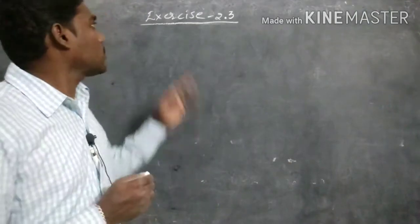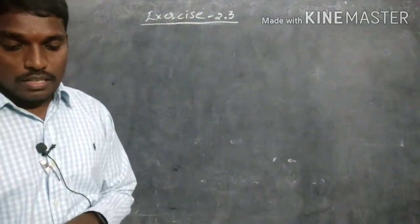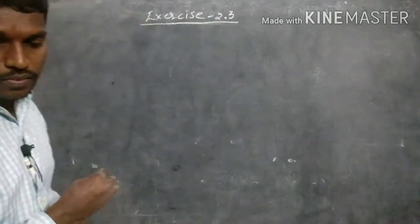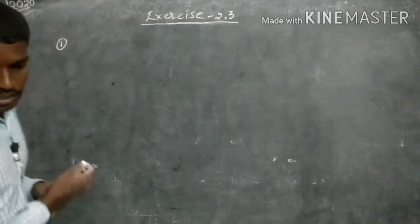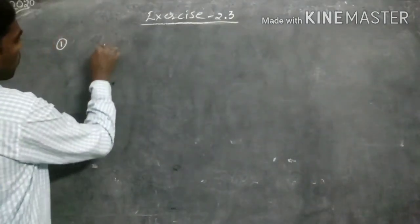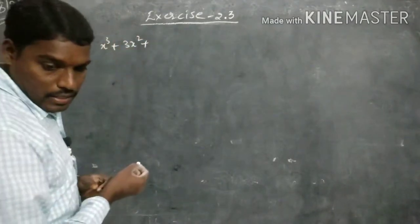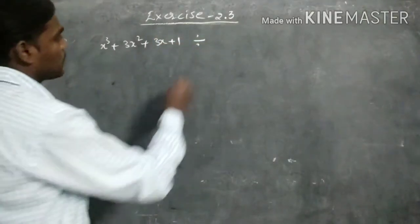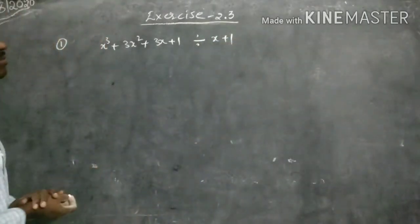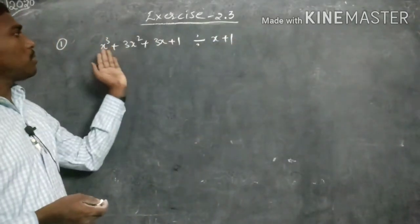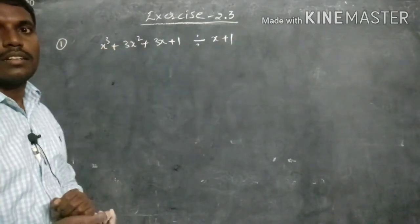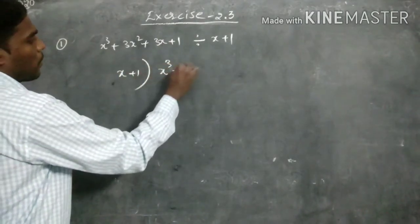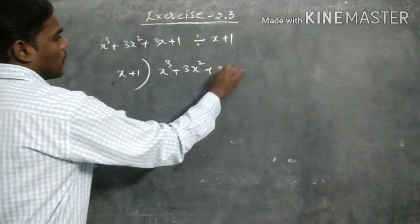In our session we are going to discuss Exercise 2.3 sums. In Exercise 2.3 we have divisive sums. The first sum is x³ plus 3x² plus 3x plus 1, when it is divisible by x plus 1. What is the remainder? This is our question.